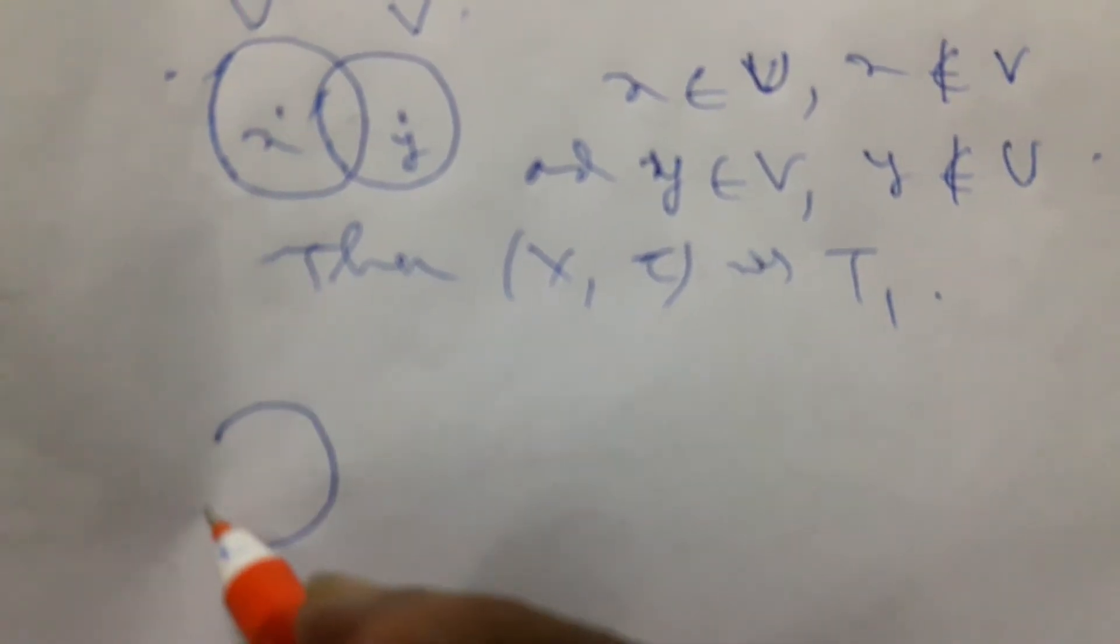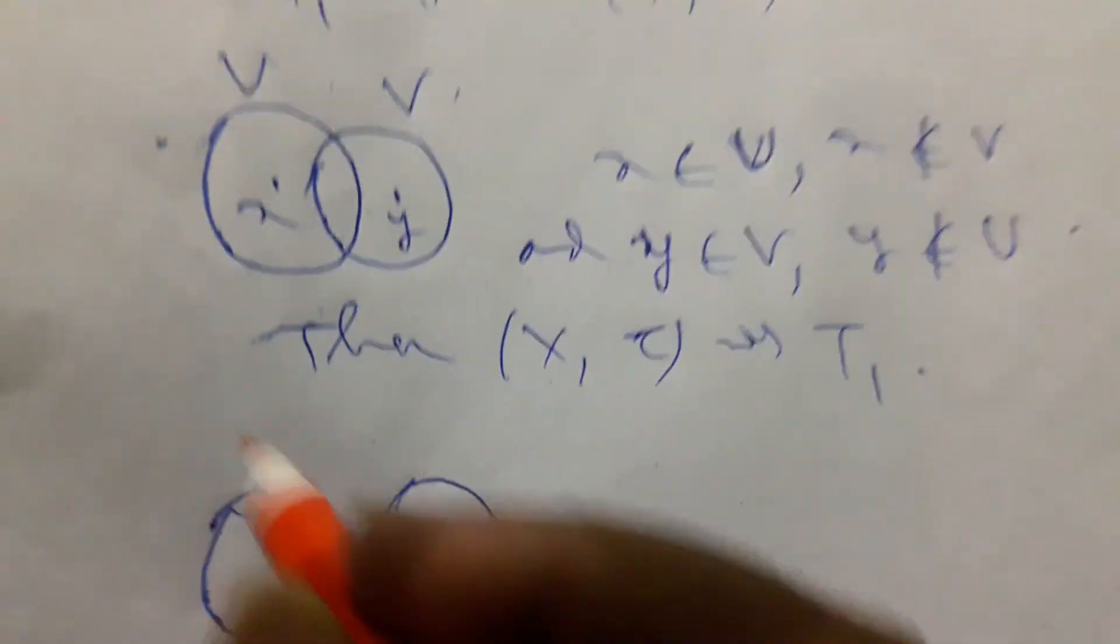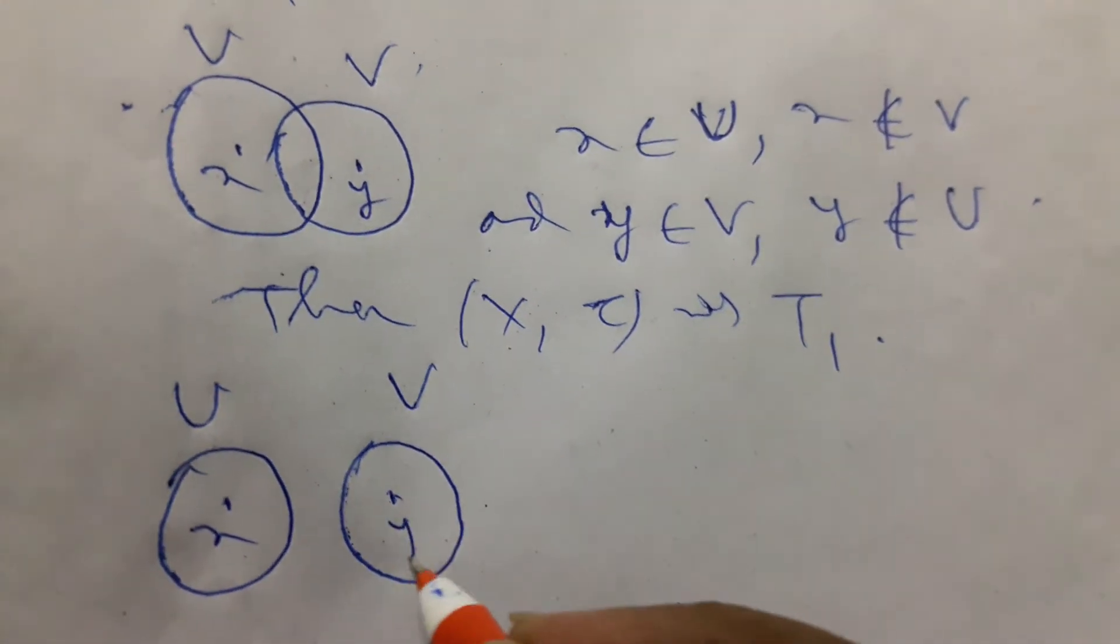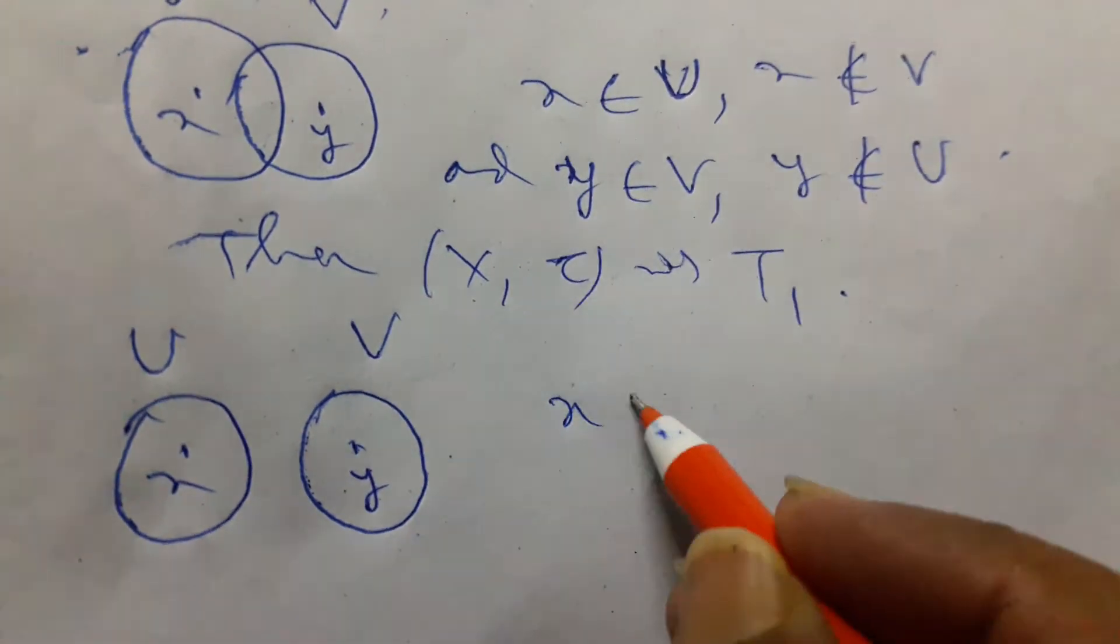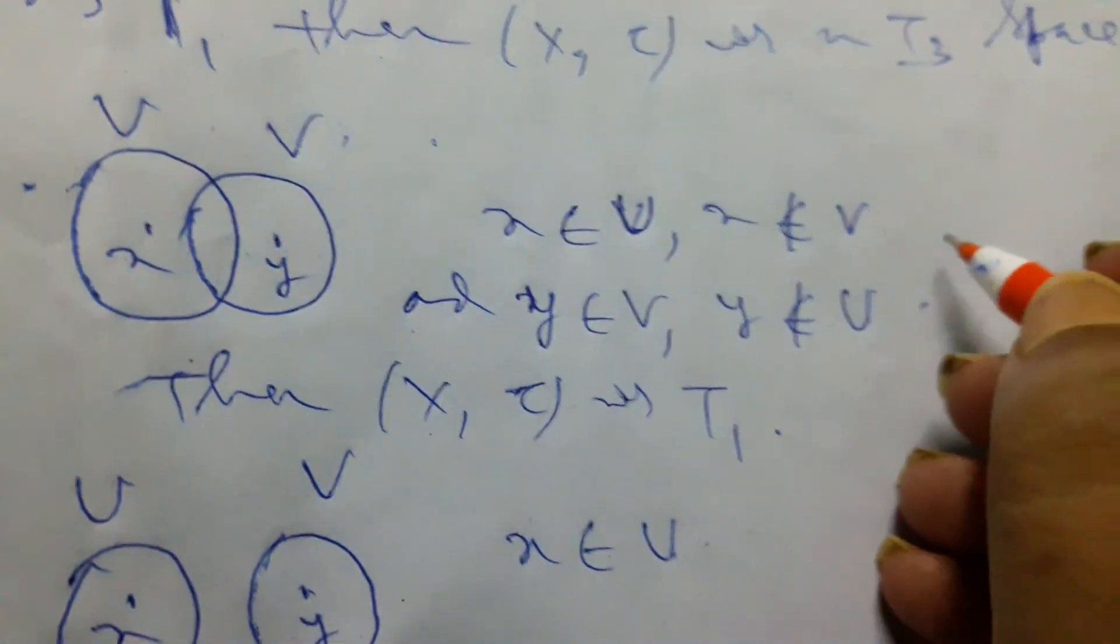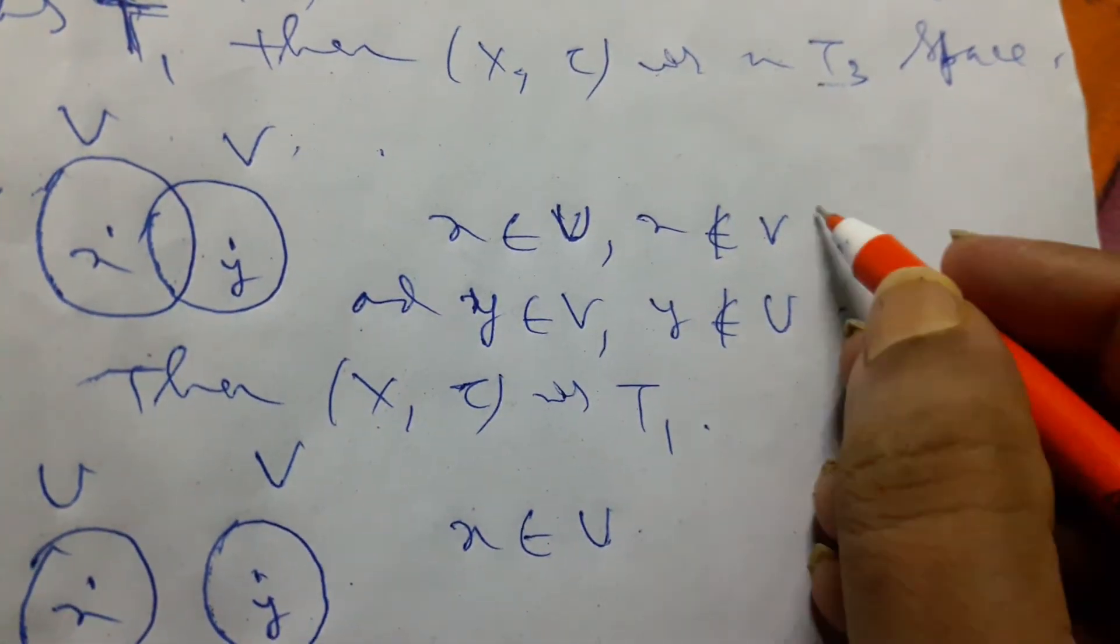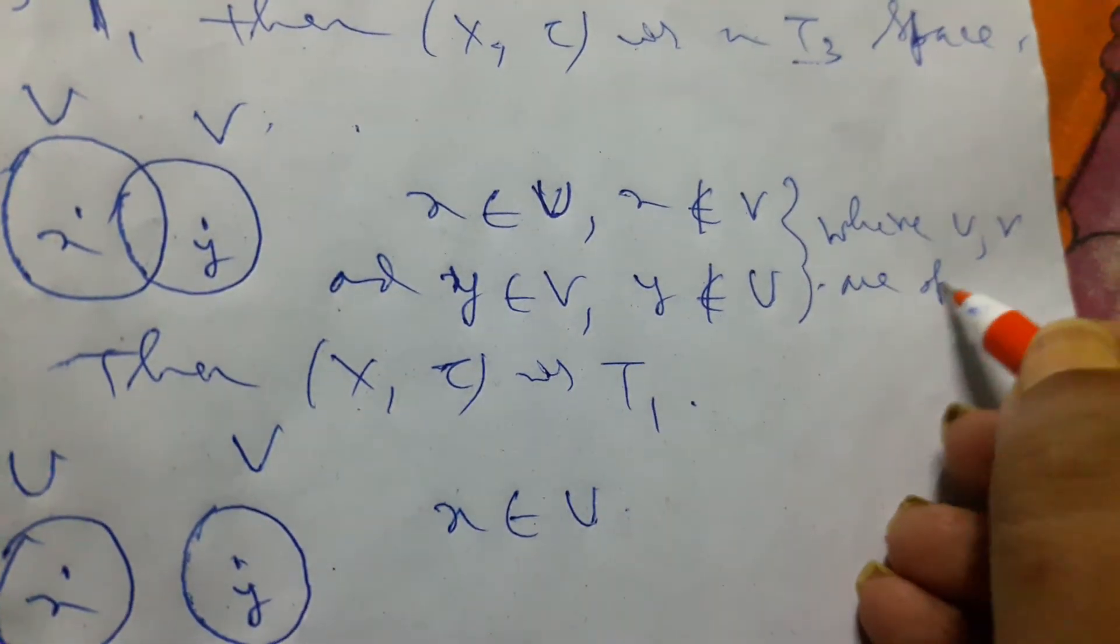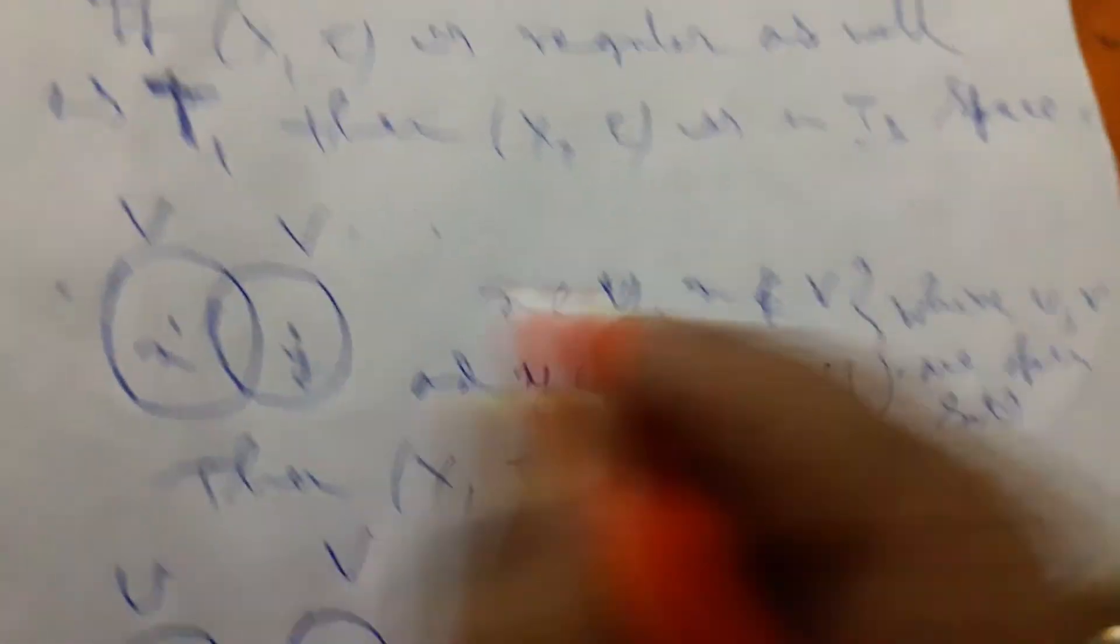But what happens there? Because we already know this, U and V are distinct, but here they meet. But if we consider this result is distinct, no problem for that. We are taking this, U and V, that means containing two points side by side, x and y. That means x belonging to U, and where it should be mentioned, U and V, where U, V are open sets in any topological space x tau.